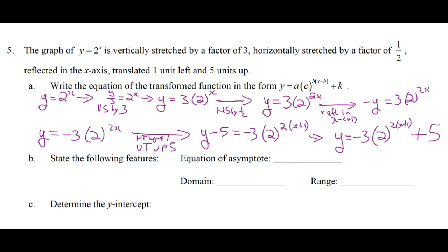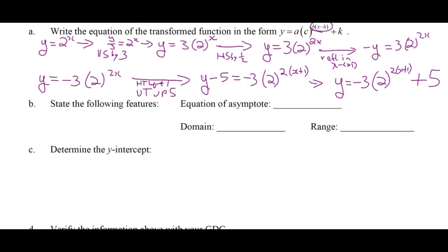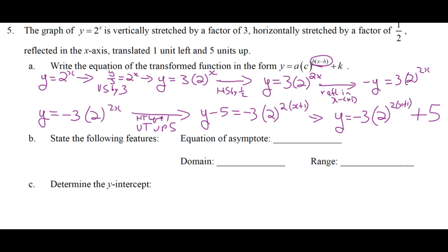Looking at this equation, I can read: you went left one, you went up five. If I had to read it in order, I'd start with the stretch, then reflection, then translations. You may see the exponent written as 2x plus 2 — in that case you'd have to factor out the 2 to read the horizontal translation. What's the equation of the asymptote? Y equals 5. What's the domain? X belongs to the reals. What's the range? It's reflected, so y is less than 5 — not equal.